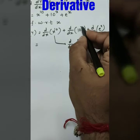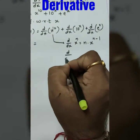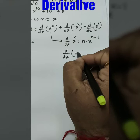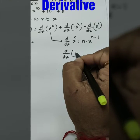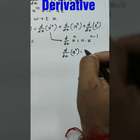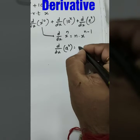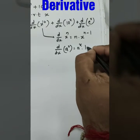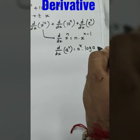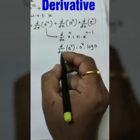Similarly, for 10 raise to x — dy by dx of 10 raise to x means a raise to x. We have seen this: it equals a raise to x into log of base, so 10 raise to x into log 10.